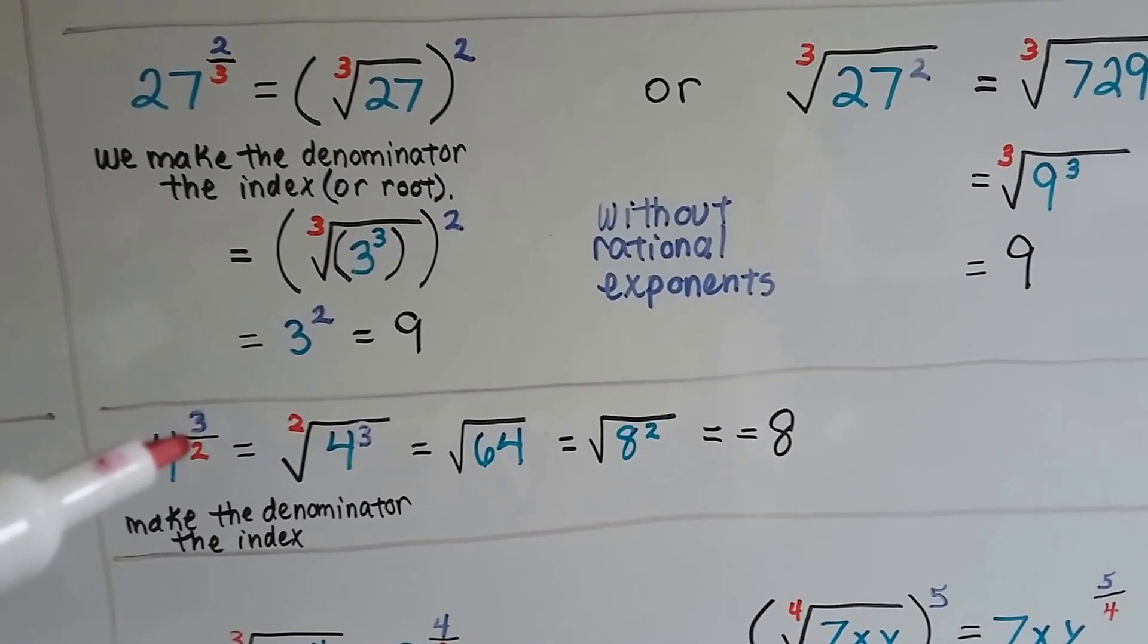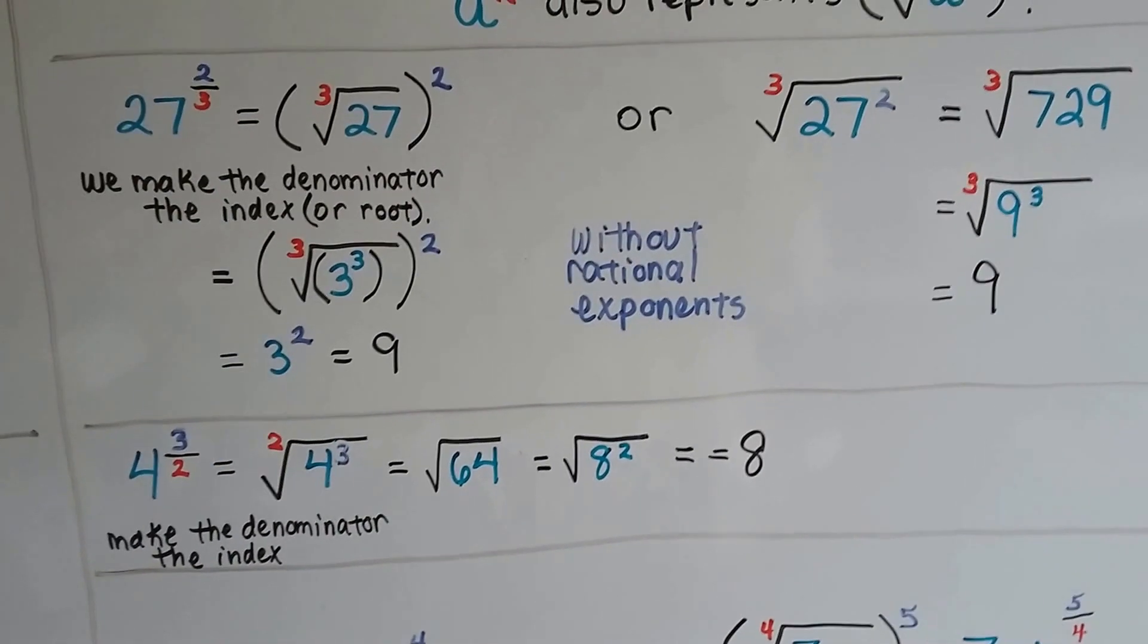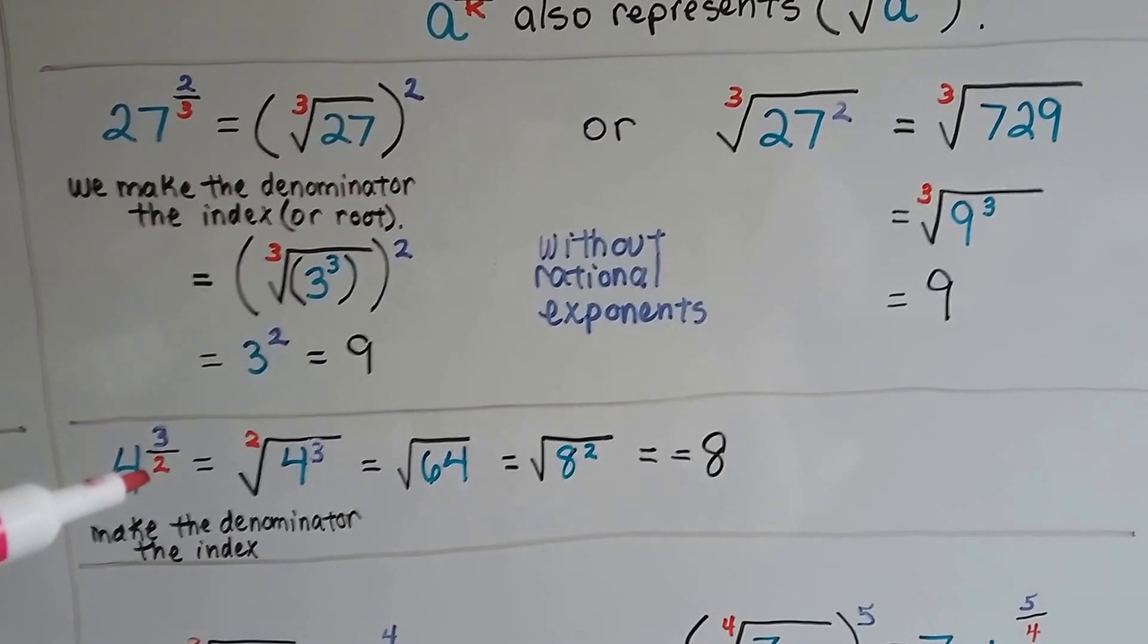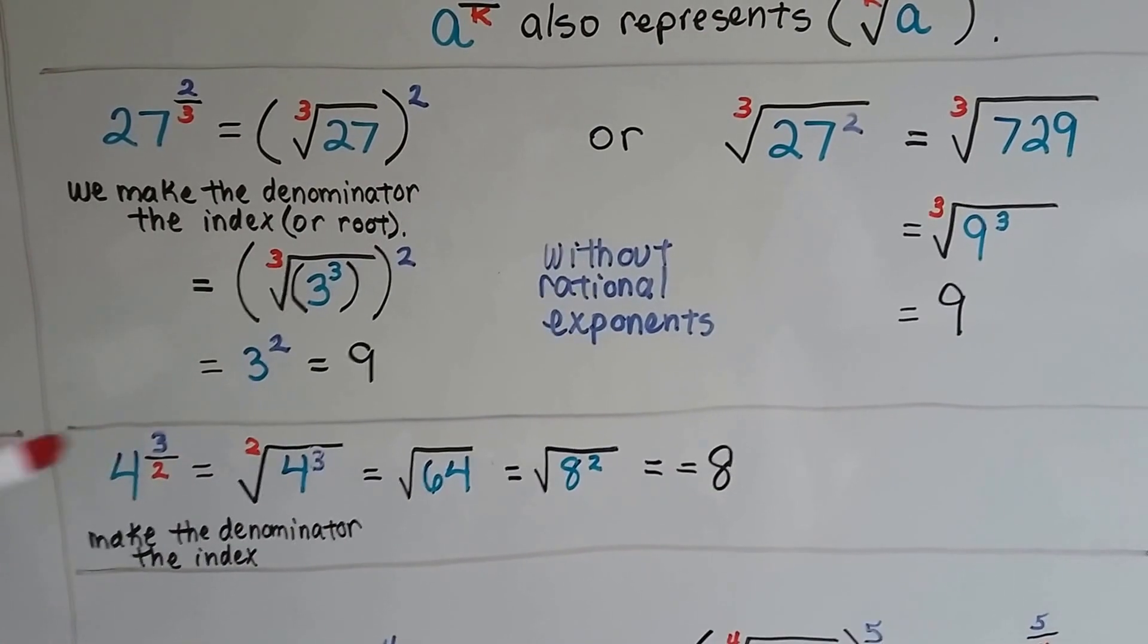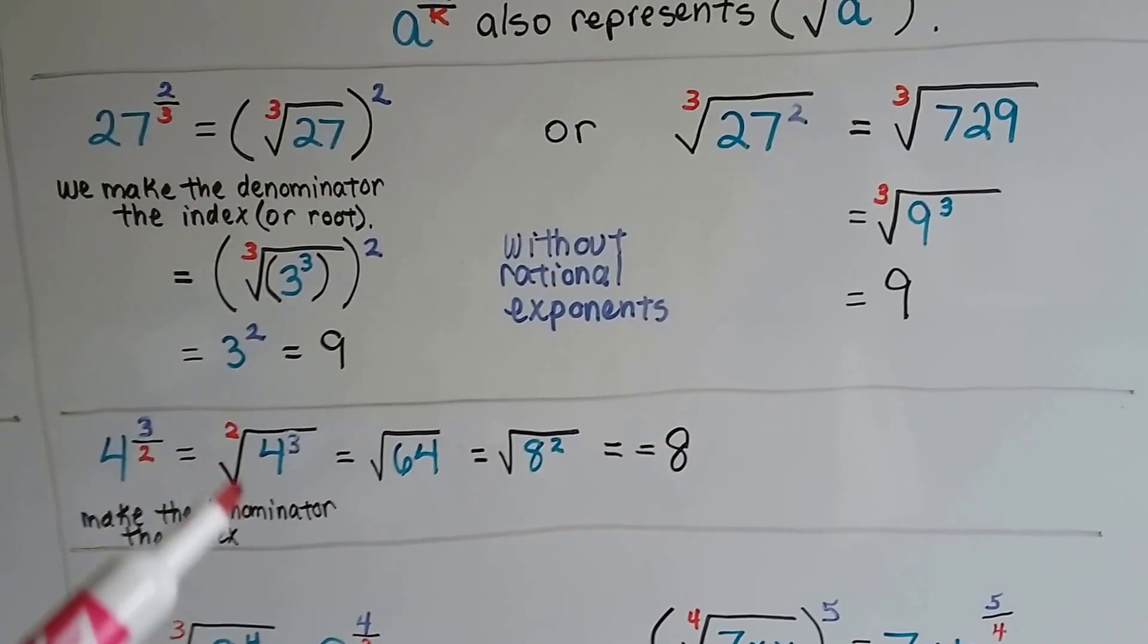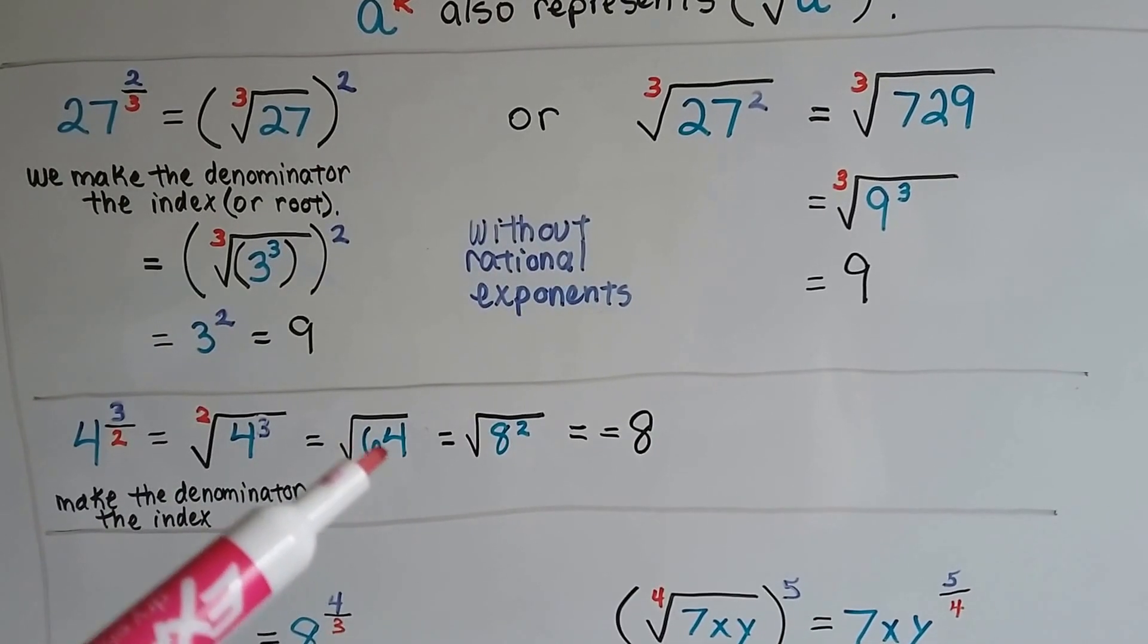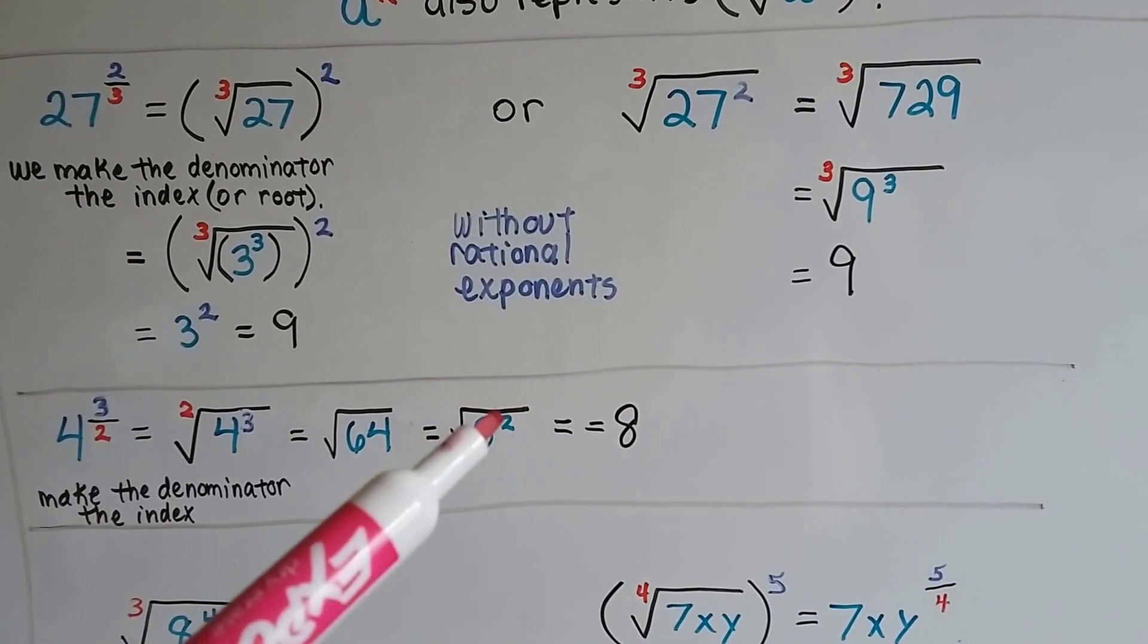Take a look at this one. We have 4 to the 3 halves power. That means it is the square root of 4 to the third power. Now, what do you notice about these? See how the denominator in this exponent is a 3, that's the root. The denominator in this one is a 2, that's the root. Isn't that cool? Makes your life easy. So whatever the denominator is, make that the index, make that the root. This would be the square root. All we have to do is 4 times 4 times 4, which is a 64. And we can square that because we want to find a perfect square. That's 8 times 8. We can remove the radical sign and that little exponent and say it's 8.